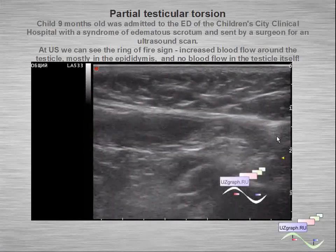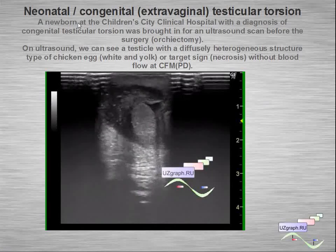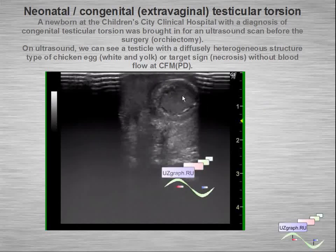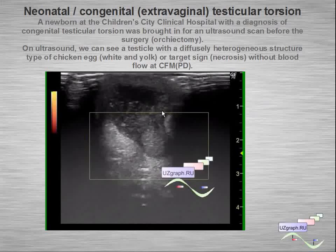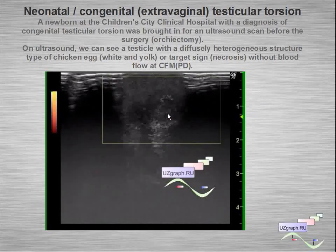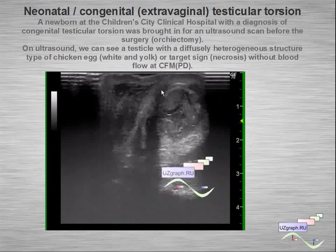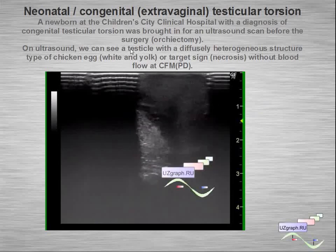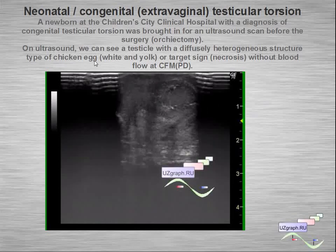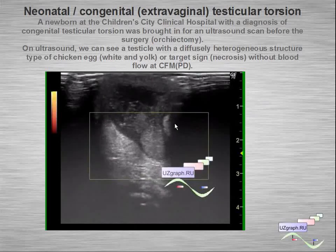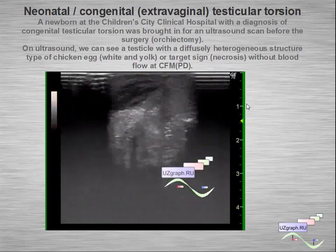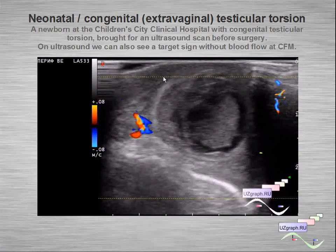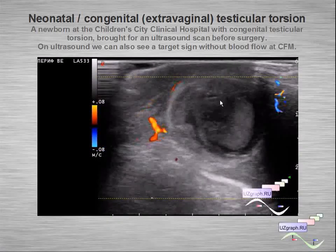Another example: neonatal or congenital extravaginal testicular torsion. We can see necrotic testicles with a chicken-egg appearance or target sign appearance, without blood flow at color flow mode. Another congenital testicular torsion with target sign, also without blood flow inside.